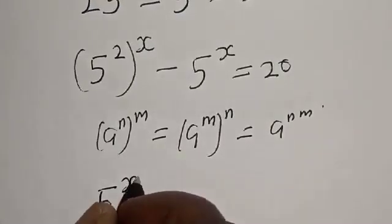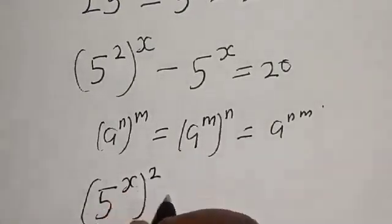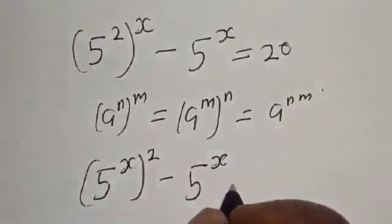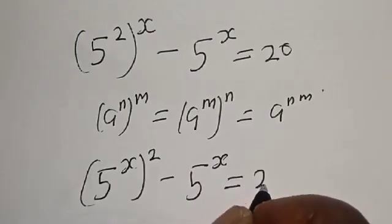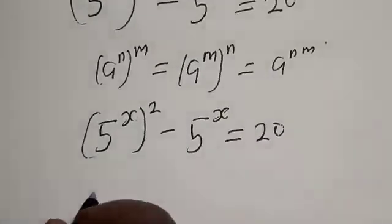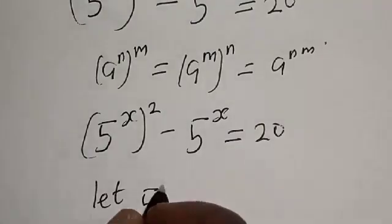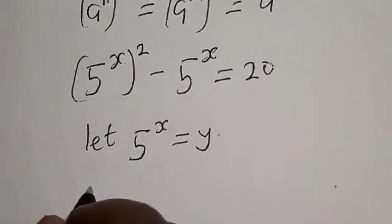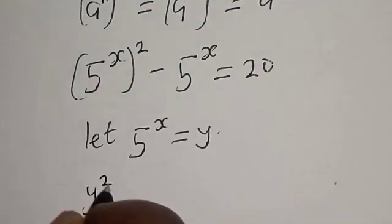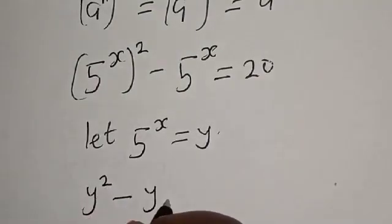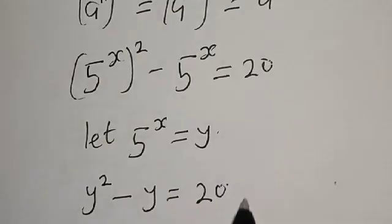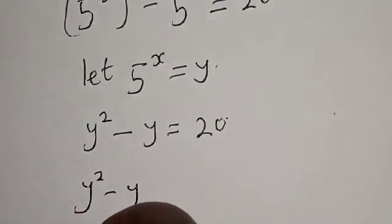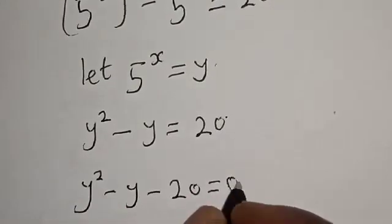We have 5 raised to power 2x minus 5 raised to power x is equal to 20. Let 5 raised to power x equal y. Substituting gives us y squared minus y minus 20 equals 0.